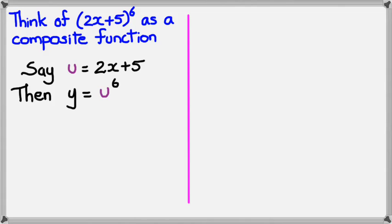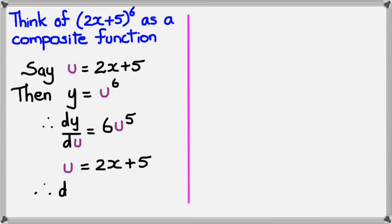Which means now we can differentiate y, but instead of doing dy/dx, we're going to do dy/du. Which means this would become 6u to the power of 5. And we also know u is equal to 2x plus 5. Which means we can differentiate du with respect to dx, and we would get just 2.